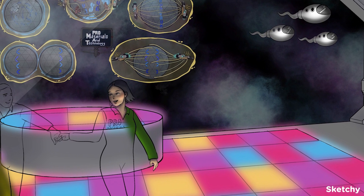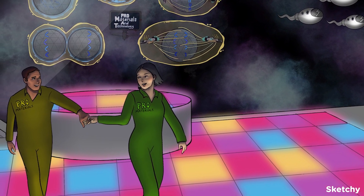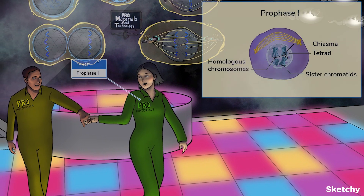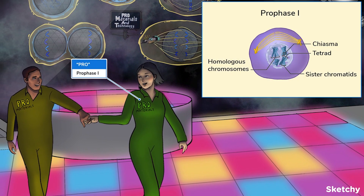We'll begin with prophase I. Just like in mitosis, the chromatin condenses into chromosomes, the nucleolus disappears, the nuclear envelope starts breaking down, and the spindle apparatus begins assembly.